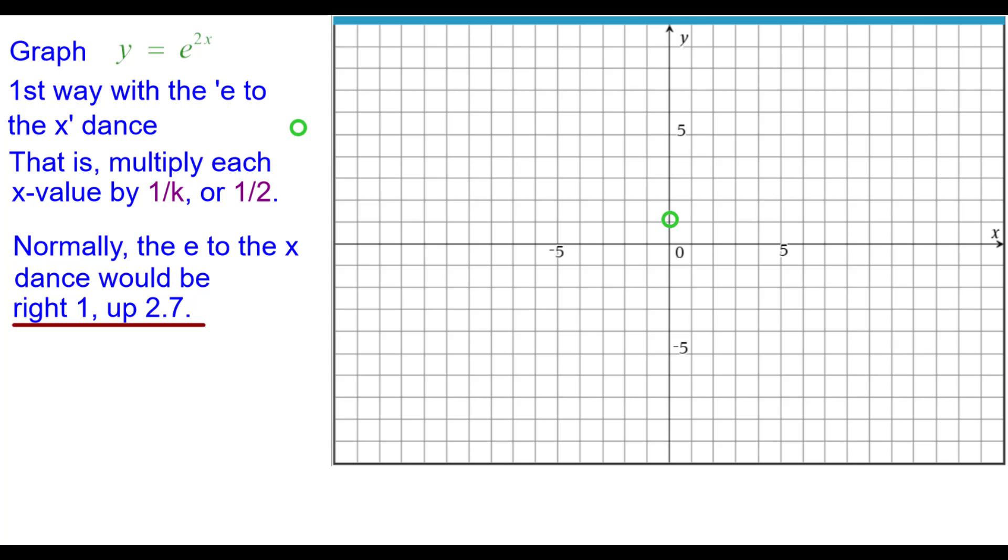Now normally e to the x dance would be right 1 up e, which is 2.7 approximately. For our graph it is going to be right 1 half up e, about 2.7 because a half times 1 is a half. Notice we furnish these values that students should know. So right a half up e, which is 2.7.